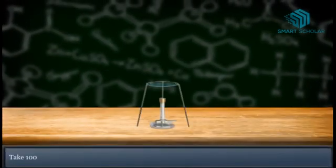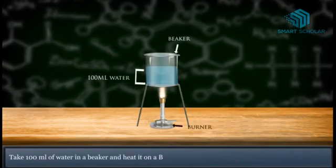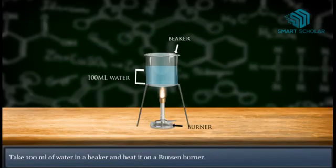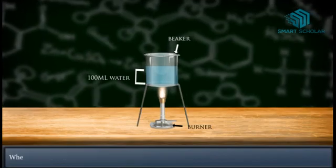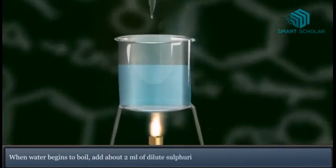Take 100 ml of water in a beaker and heat it on a Bunsen burner. When water begins to boil, add about 2 ml of dilute sulphuric acid.